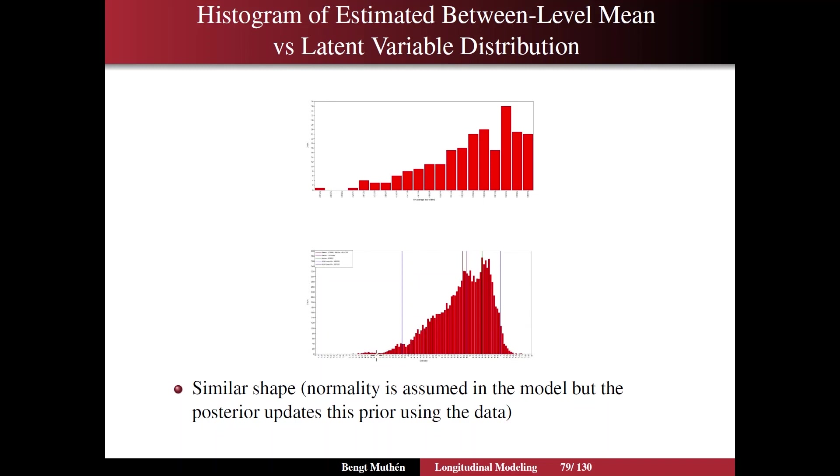Normality is assumed in the model, like it is for every random effect. But the posterior updates this prior. The normality assumption is seen as a prior, it's a prior on the distribution. It updates this prior to a posterior, using the information from the data. So that gives you a feeling for what the real data looks like.